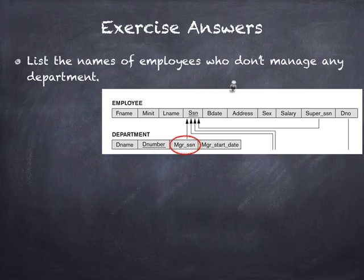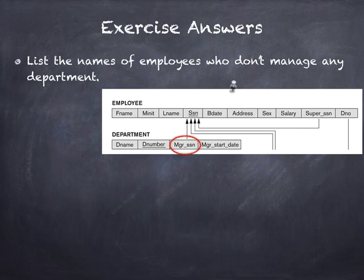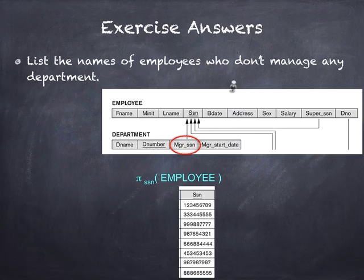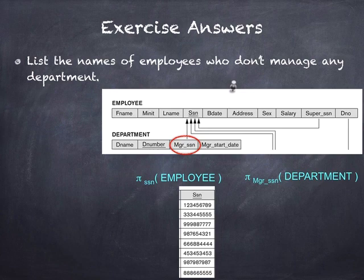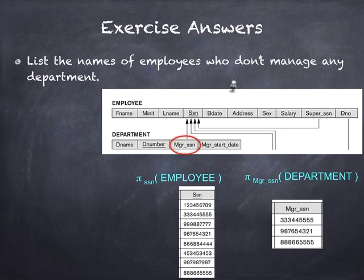The next exercise asks for employees who are NOT managers. The idea is: which employees' SSNs do not appear as Manager_SSN in the DEPARTMENT table? Any employee whose SSN appears in EMPLOYEE but not in the Manager_SSN attribute of DEPARTMENT is not managing any department. I take the SSNs from EMPLOYEE, compare them with the Manager_SSN values from DEPARTMENT — those three employees are the managers — and then find who is in EMPLOYEE but not among those manager SSNs. The relational algebra operator that can help here is set difference.